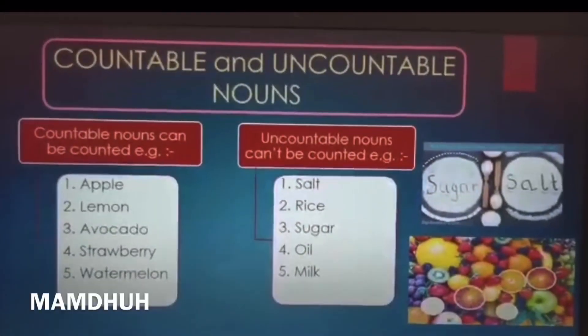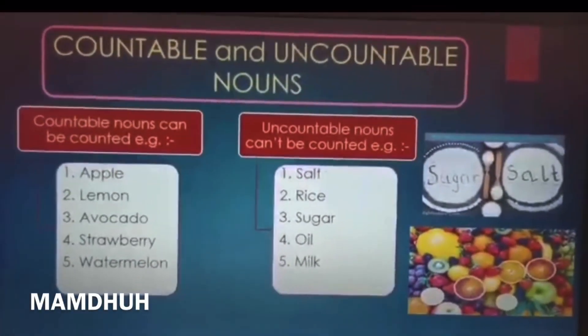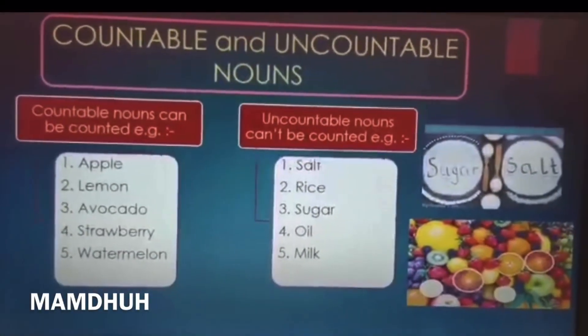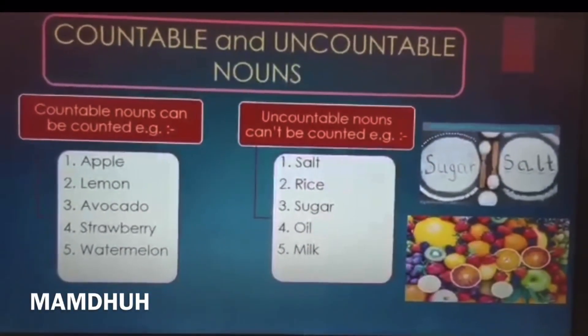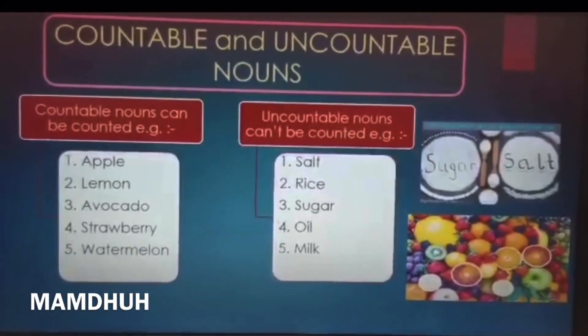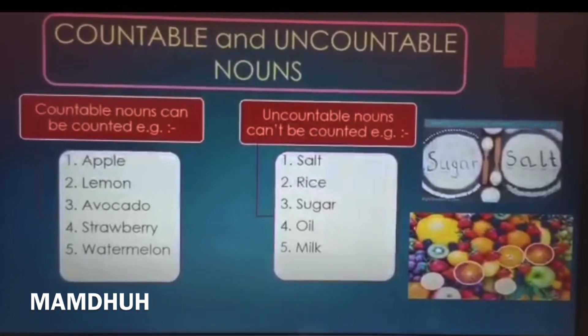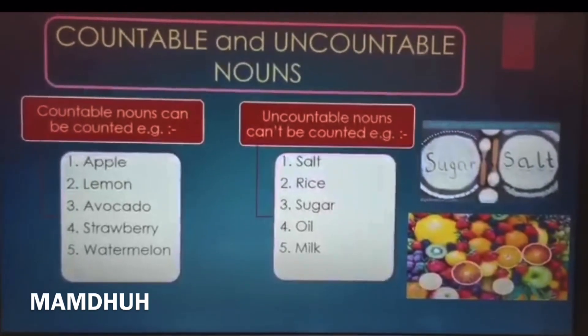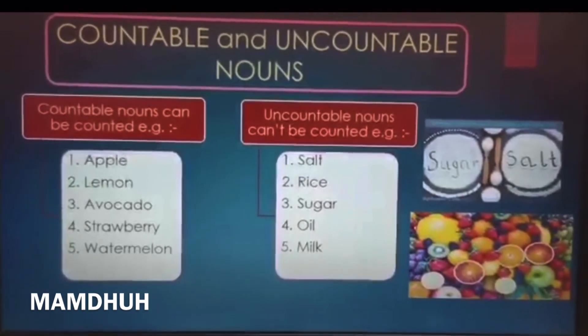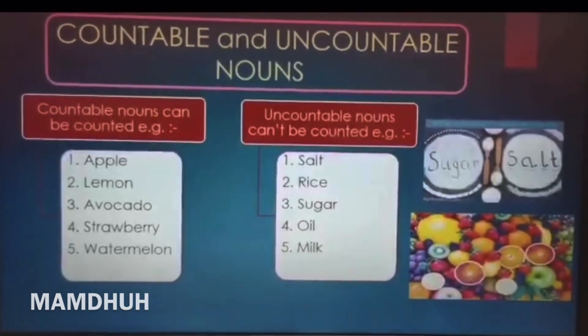Countable nouns — they can be counted. Third, examples: one apple, two lemon, three avocado.